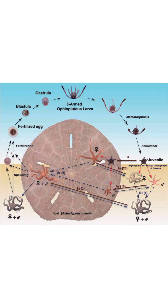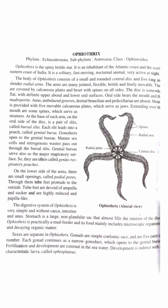Reproduction in Ophiothrix: sexes are separate. Gonads are small coelomic sacs and are five pairs in number. Each gonad has a narrow gonoduct which opens to the genital bursa. Fertilization and development are external in sea water. Development is indirect with a characteristic larva called the ophiopluteus.